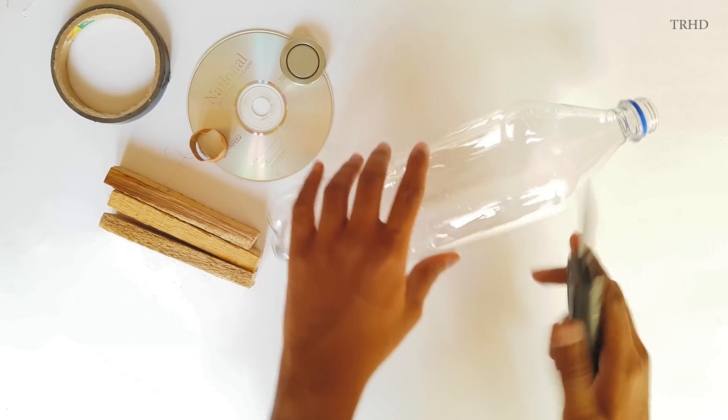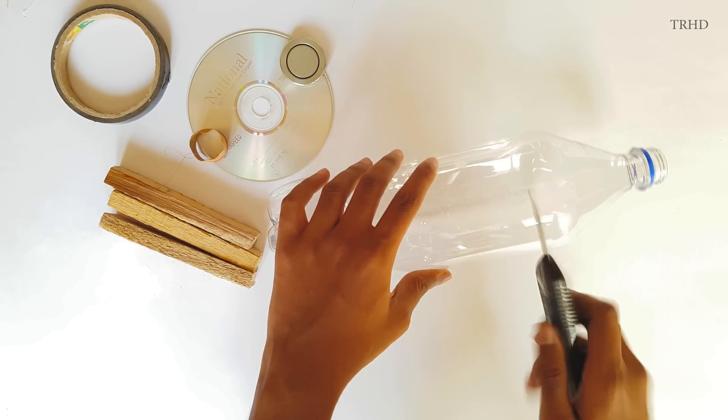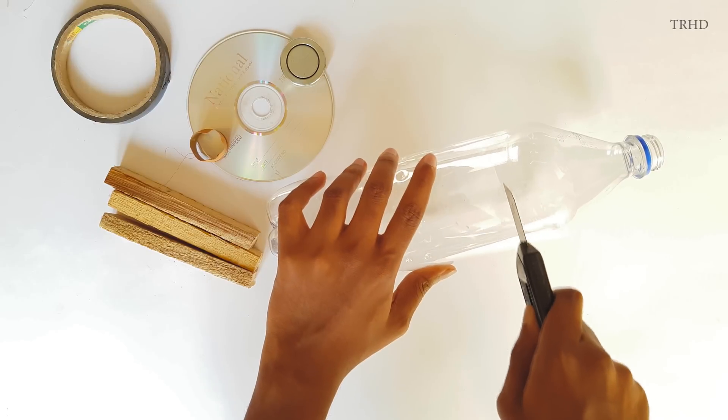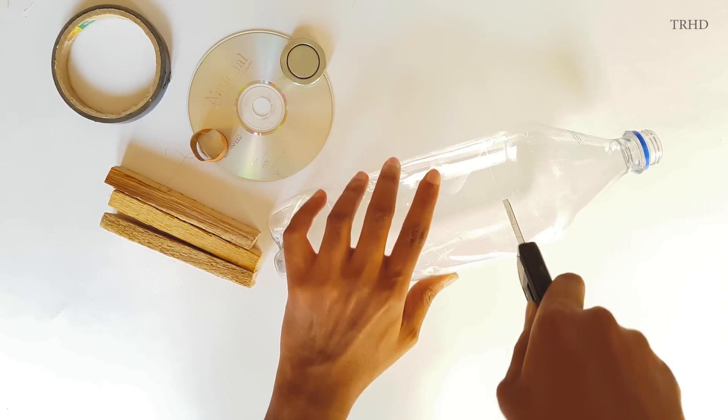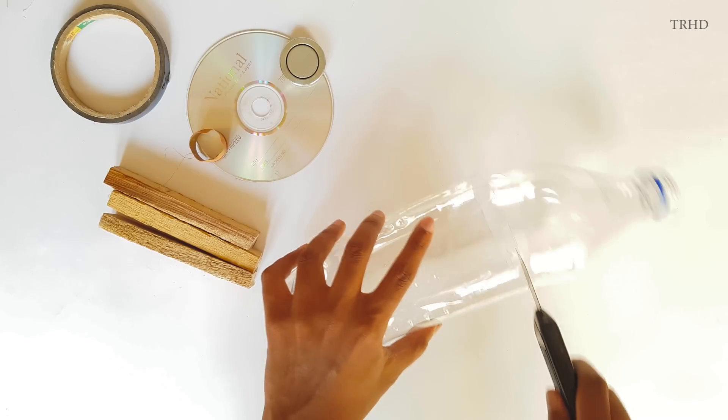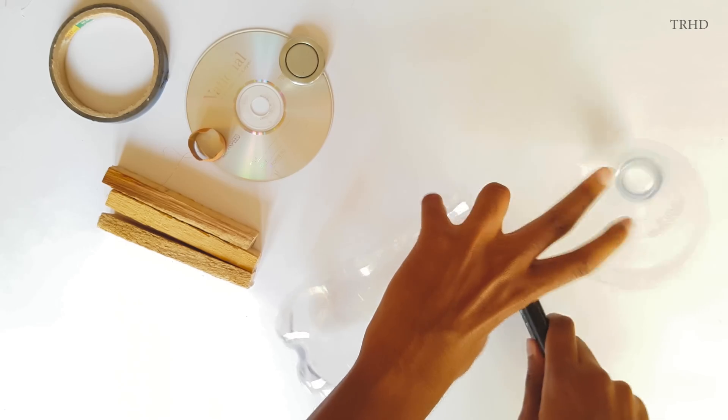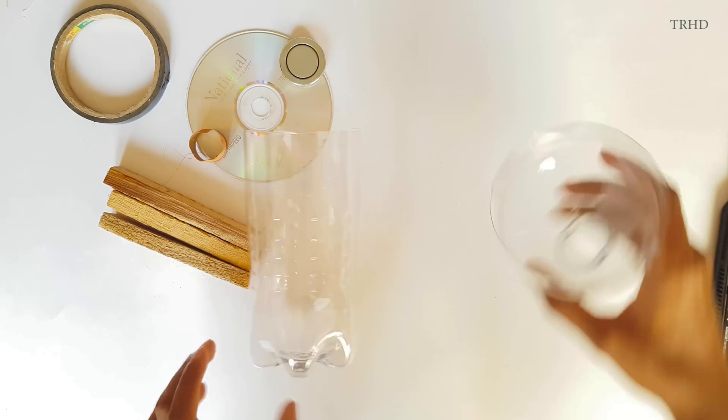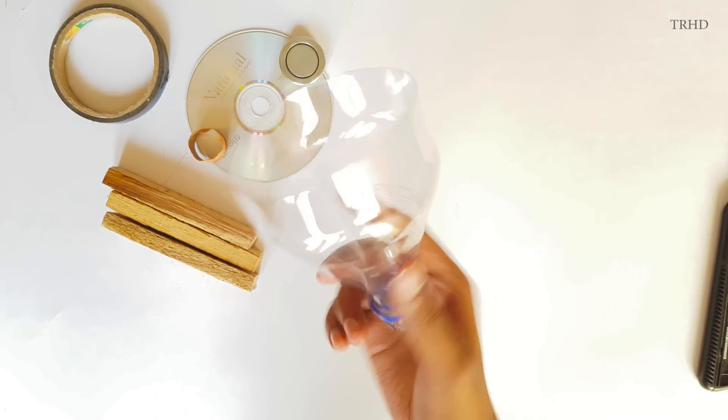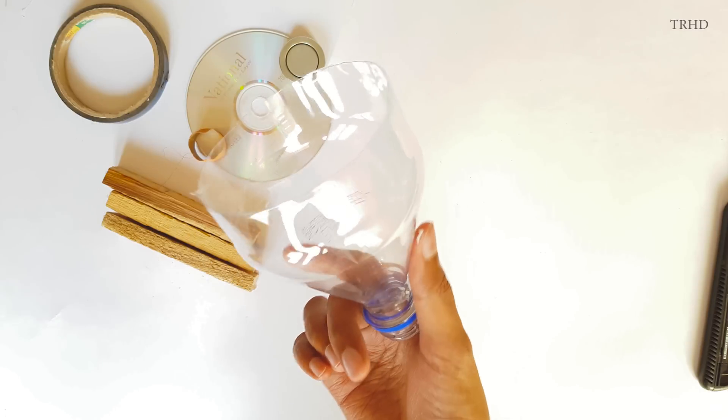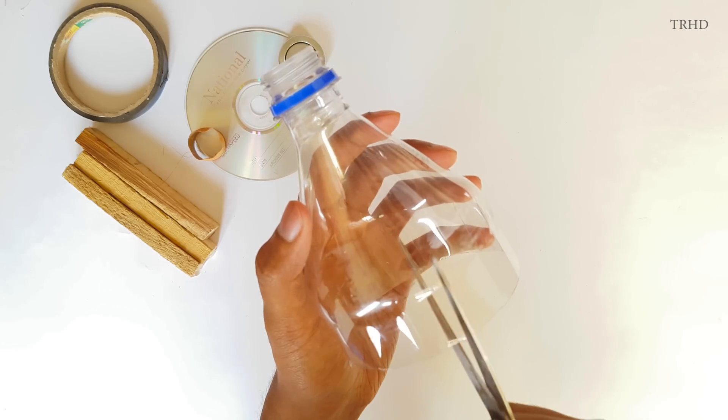Take this plastic bottle. You need to cut it over here. Just do as I'm showing you. Use a blade and cut the plastic bottle over here. So this is the part that we want from this plastic bottle. We are going to make a plastic cone out of this, a speaker cone.